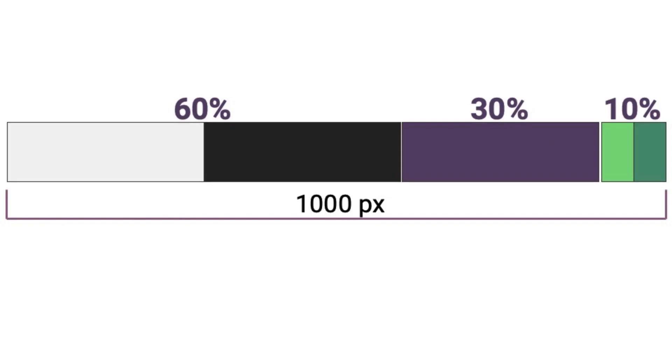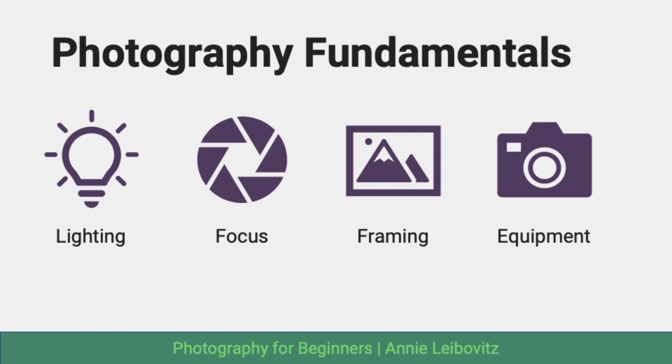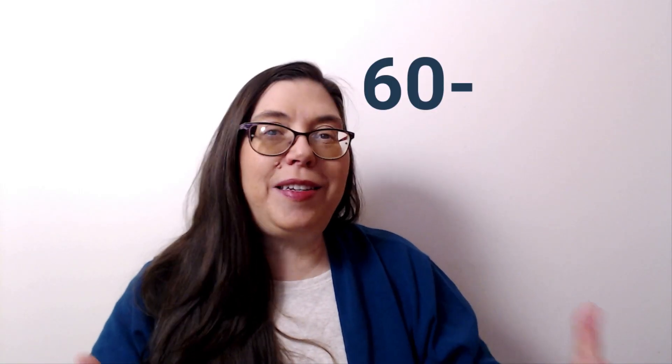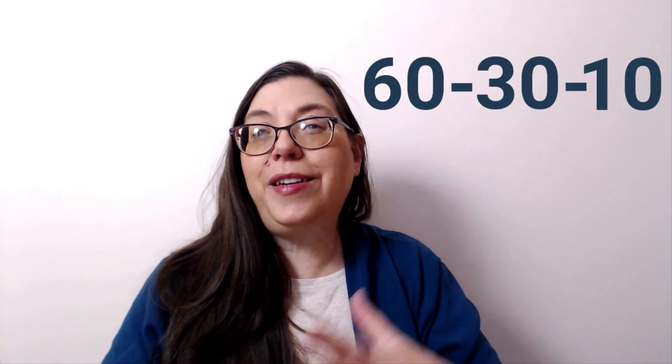Sometimes it helps to have two accent colors. In this example, I split the accent color between the two greens. This is a potential combination on the slide. As you can see, the 60-30-10 rule isn't a firm rule, but a great guideline to test out different color combinations. Continue watching for more slide design tips and tricks.